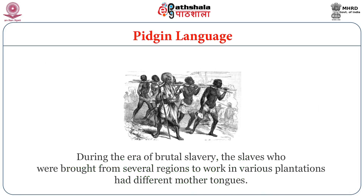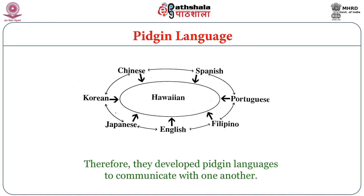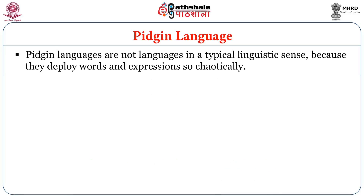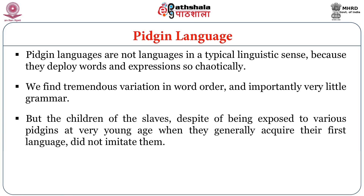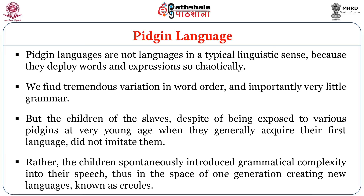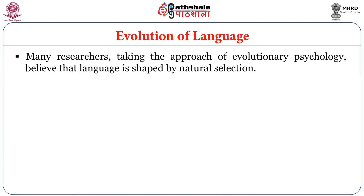During the era of brutal slavery, slaves brought from several regions to work in various plantations had different mother tongues. They therefore developed Pidgin languages to communicate with one another. Pidgin languages are not languages in a typical linguistic sense because they deploy words and expressions chaotically, with tremendous variation in word order and very little grammar. But the children of the slaves, despite being exposed to various Pidgins at a very young age, did not imitate them. Rather, the children spontaneously introduced grammatical complexity into their speech, thus creating new languages known as Creoles within one generation.